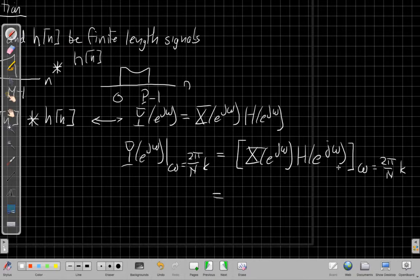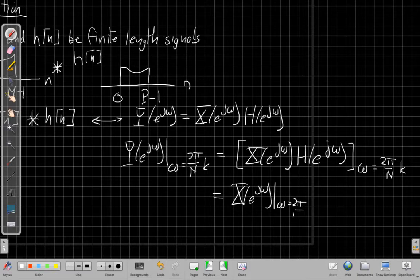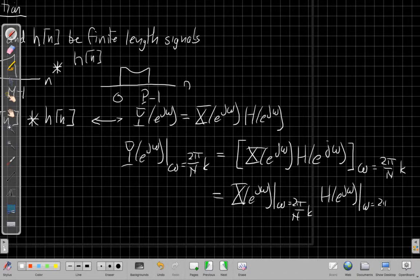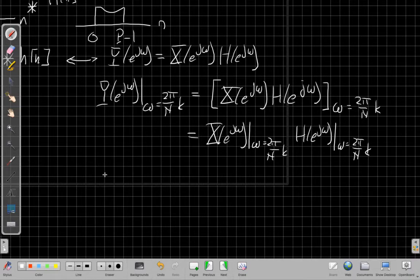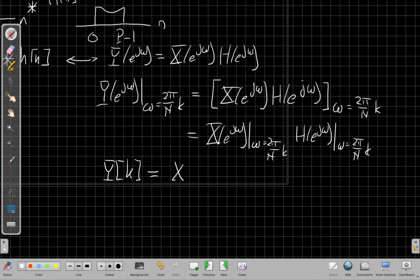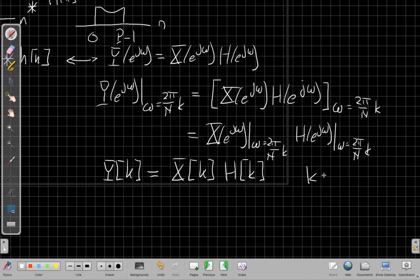I'm just evaluating at N discrete values of little omega. If this is true for every little omega continuous, it still has to be true for the discrete ones. If I take the product and then sample, it's the same as taking the samples and then finding the product afterwards. From earlier discussions, this is just sampling in frequency, the DFT of the output.